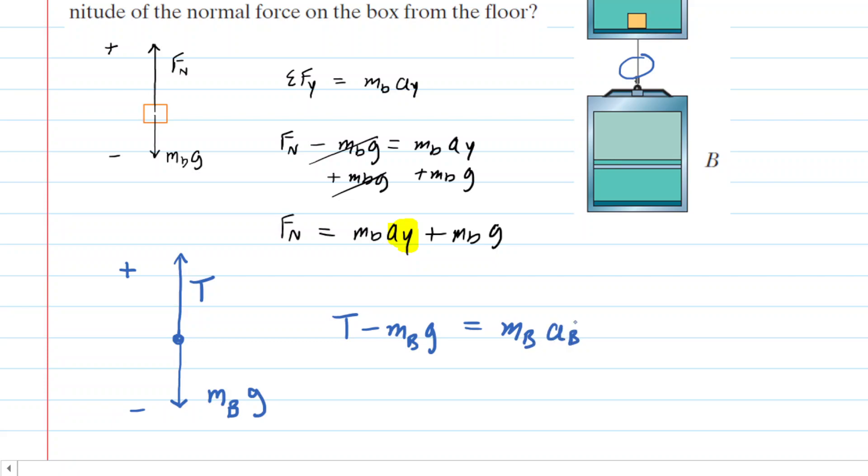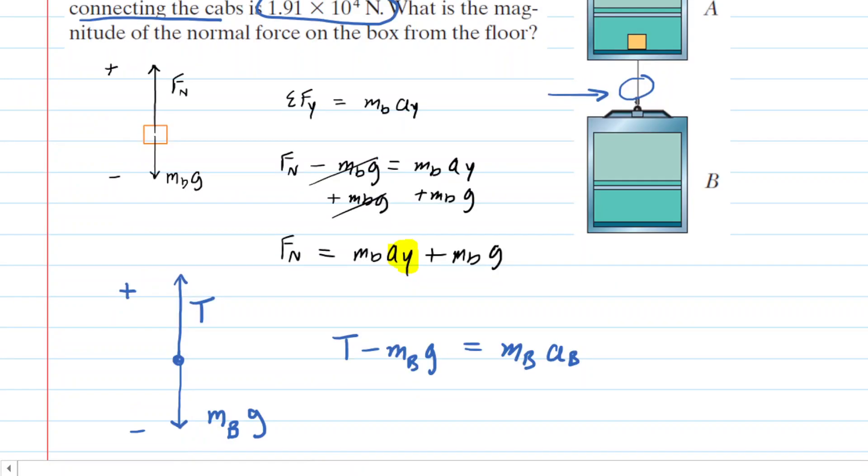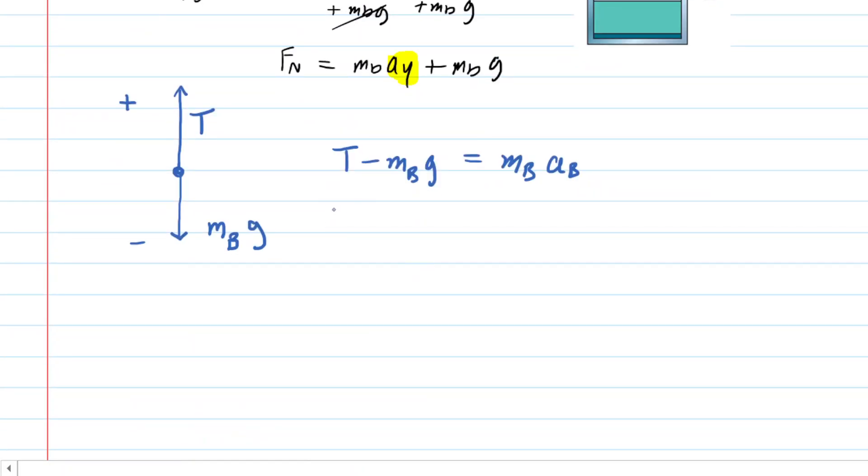Now we have some important information here. If we go back up we have the tension in that cable, it says the tension in the cable connecting the cabs. So that's this cable right here and that's the one we were using down below in our Newton's second law calculation. We also know the mass of cab B is 1300 kilograms, so we can come in here and plug in those known values.